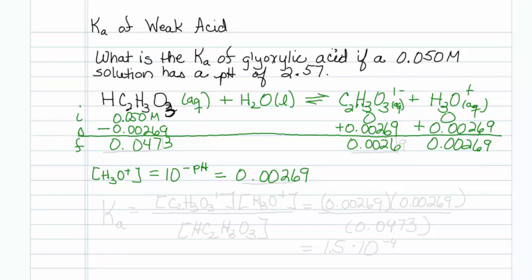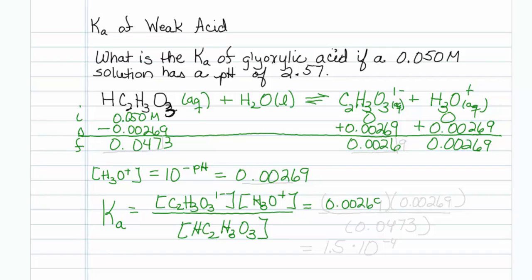Now I just have to plug this into the Ka expression. The Ka expression is equal to the conjugate base times the hydronium, all over the starting acid. So that would be 0.00269 times 0.00269 over 0.0473.